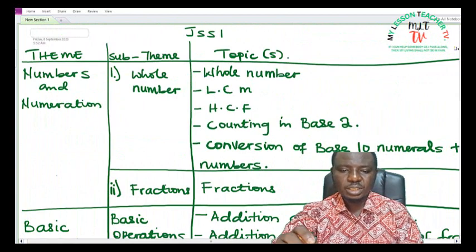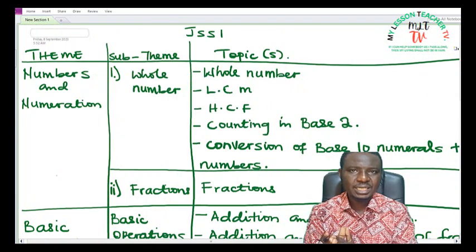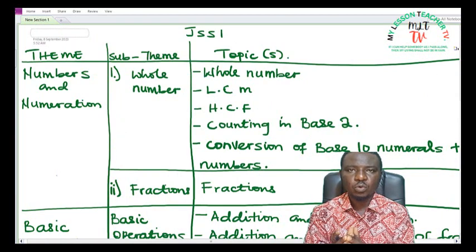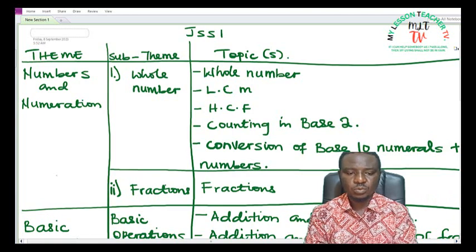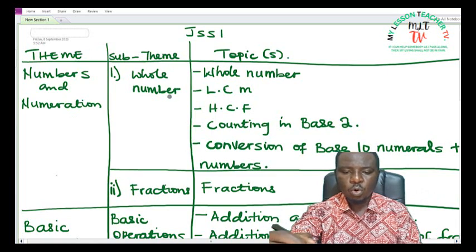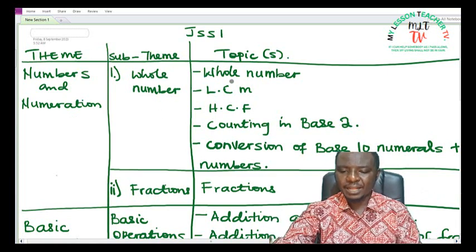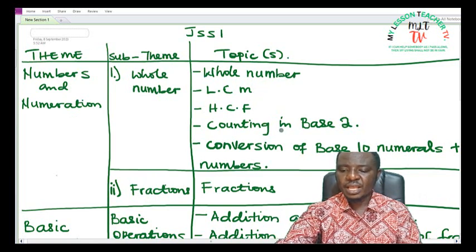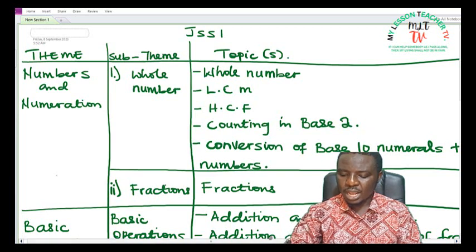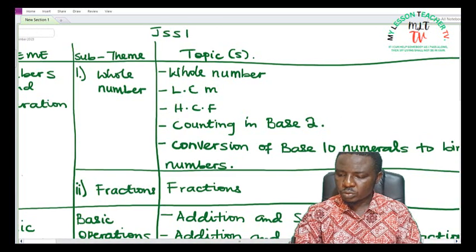For those in JSS1, these are the topics you may likely be treating, or this is what is expected of you to know before you get to JSS2. Under the theme numbers and numeration, we have the sub-themes whole numbers and fractions. Under whole numbers we have topics like whole number, LCF, counting in base two, as well as conversion of basic ten numbers to binary numbers.